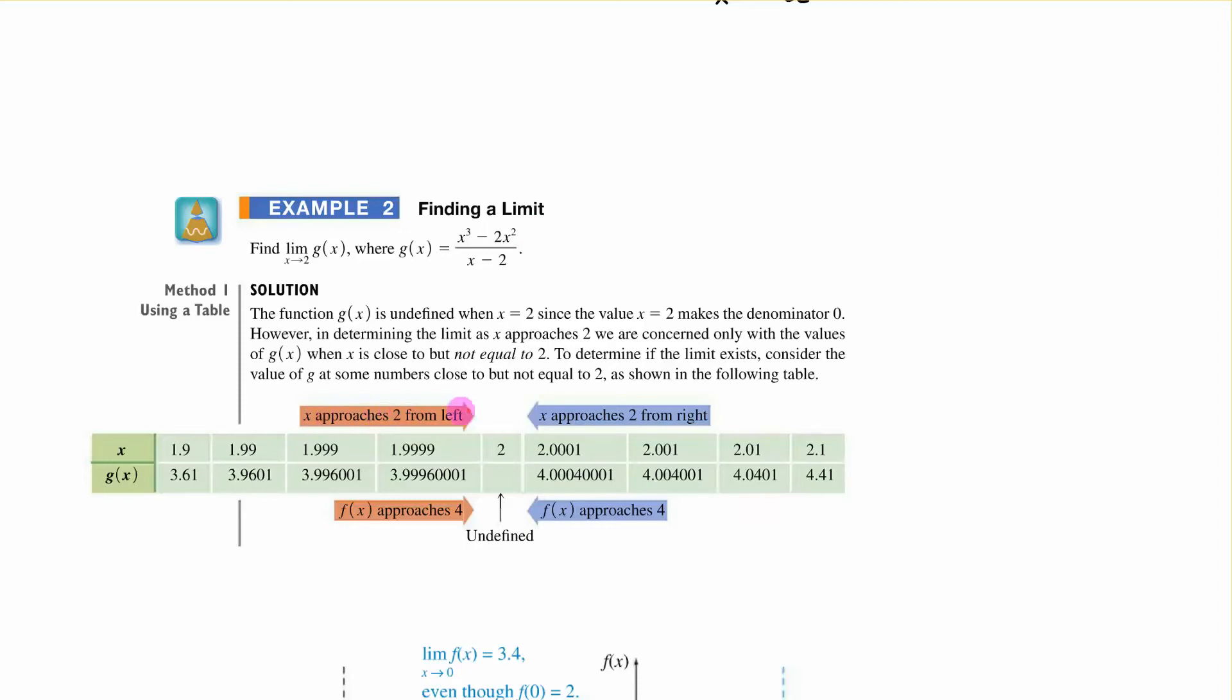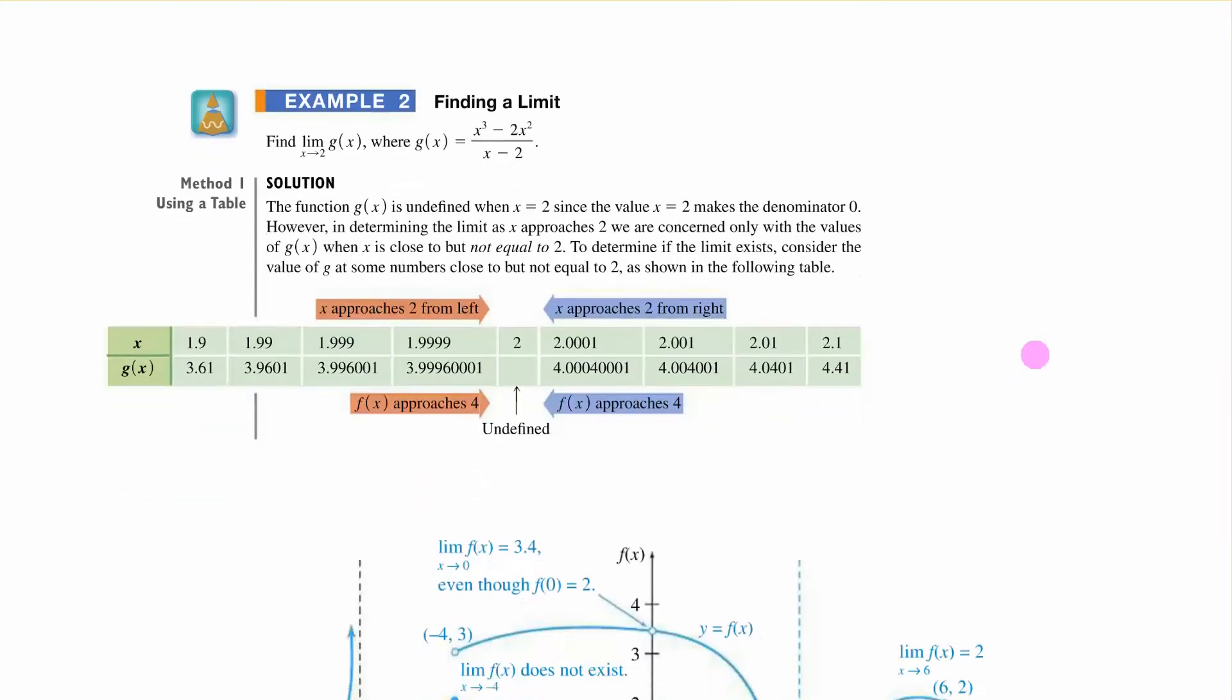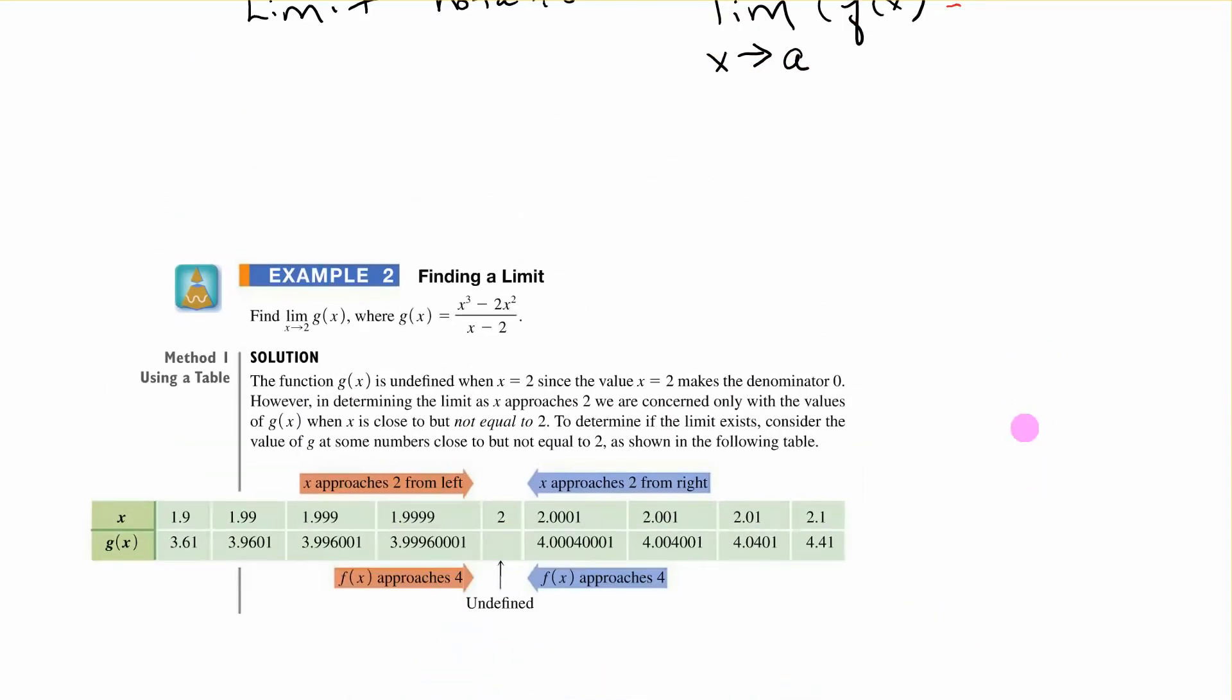As we approach from the left so we start out and we pick some values and get closer and closer and closer to 2 and from the right we do the same thing and we see what the y value is as we get closer and closer. Well we can tell what is this approaching. It's approaching 4 but from the left and the right but at x equals 2 it is undefined. So to determine if it exists we figure that that's what it's approaching even though it's not defined there.